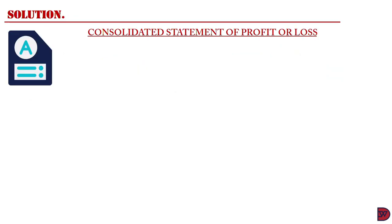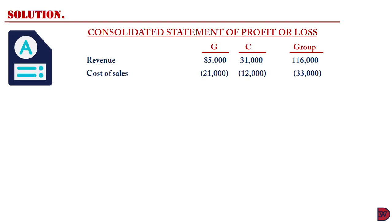For the solution, starting with the Consolidated Statement of Profit or Loss: revenue is $85,000 for Gene and $31,000 for C, giving $116,000 for the group. Cost of sales is $21,000 for Gene and $12,000 for C, giving $33,000 for the group, which leads to a gross profit of $64,000 for Gene, $19,000 for C, and $83,000 for the group.